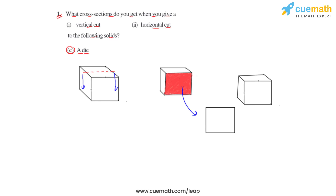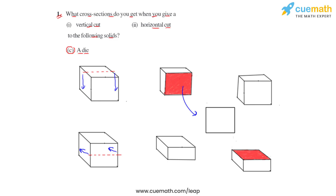If we give the same die a horizontal cut along this line, the die is again divided into two parts, and the cross section is again a square. So for a cube-shaped die, whether cut vertically or horizontally, we always get a square cross section.